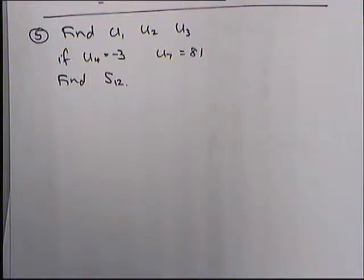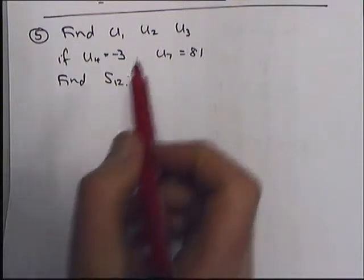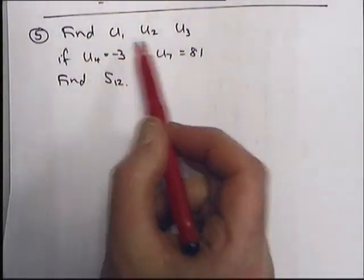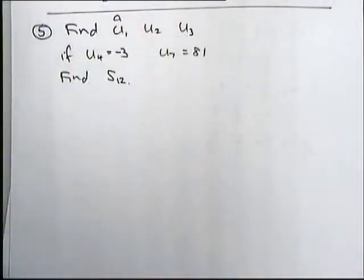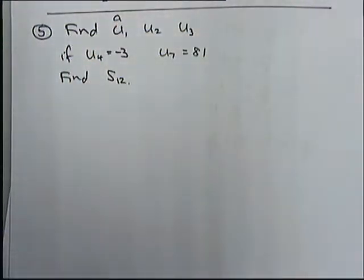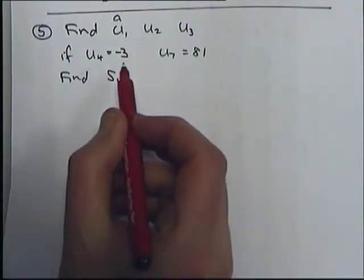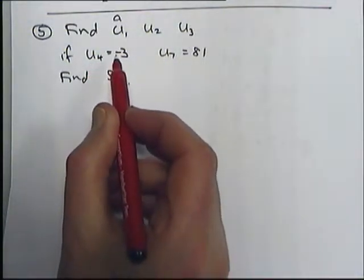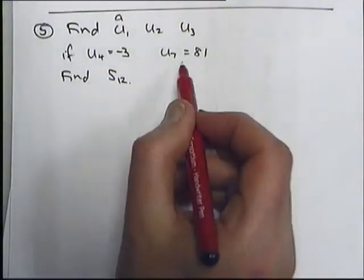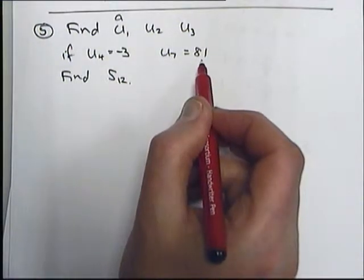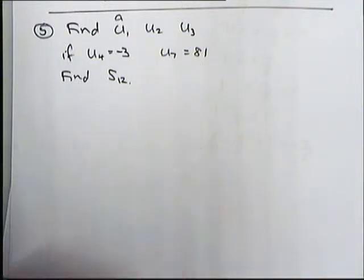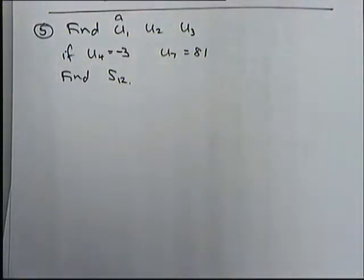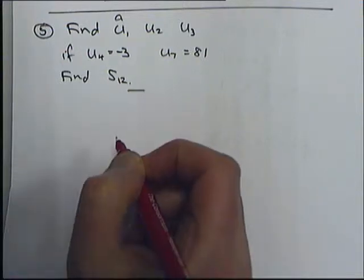The next question says: find the first three terms — U1, U2, and U3, remembering U1 is the same as A — of a geometric series which has a fourth term of minus 3 (U4 = -3) and a seventh term of 81 (U7 = 81). Find also the sum of the first 12 terms of this series.